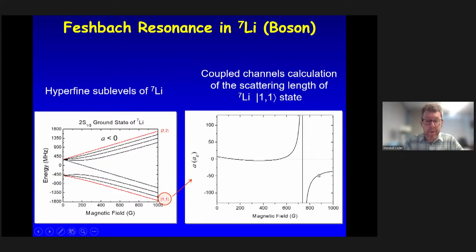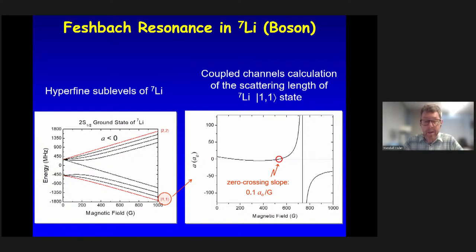As I go away from that magnetic field, the scattering length decreases in magnitude. One thing which is interesting about this particular Feshbach resonance is that there's a zero crossing, which is very shallow. At this field, the scattering length is essentially zero, which means that the Bose condensate is an ideal gas at that value of scattering length. More importantly, we want to be able to make the scattering length attractive or negative, but very weak — very small in numerical value. That occurs just to the low field side of this zero crossing.